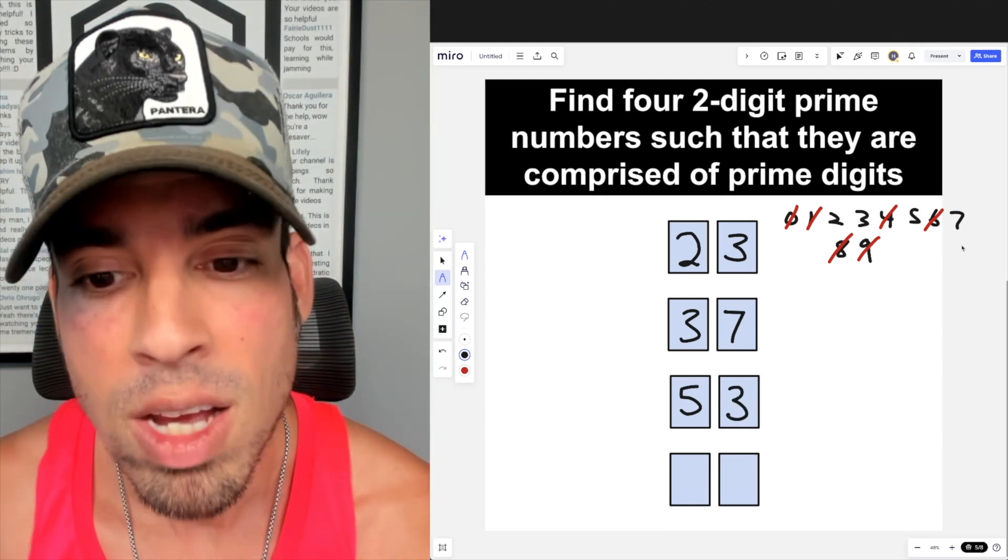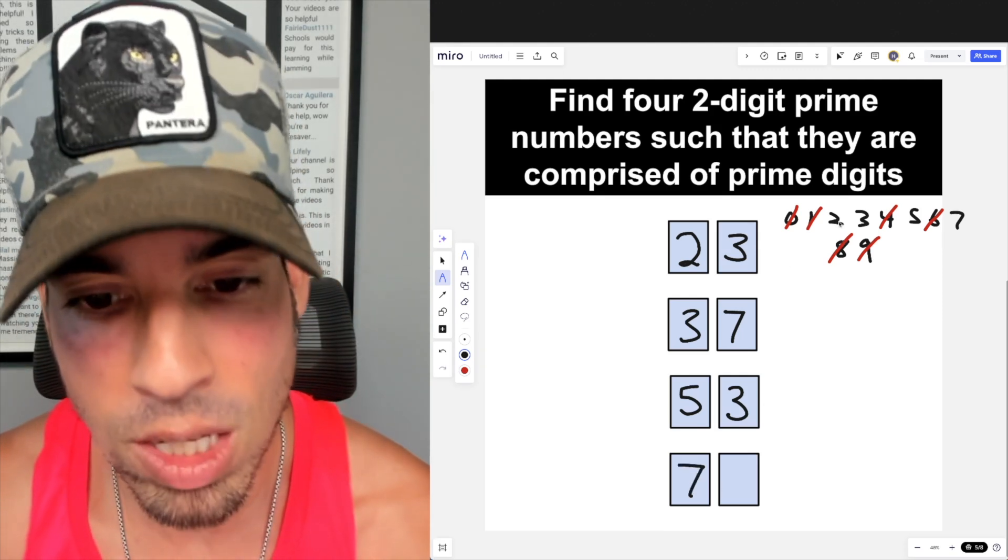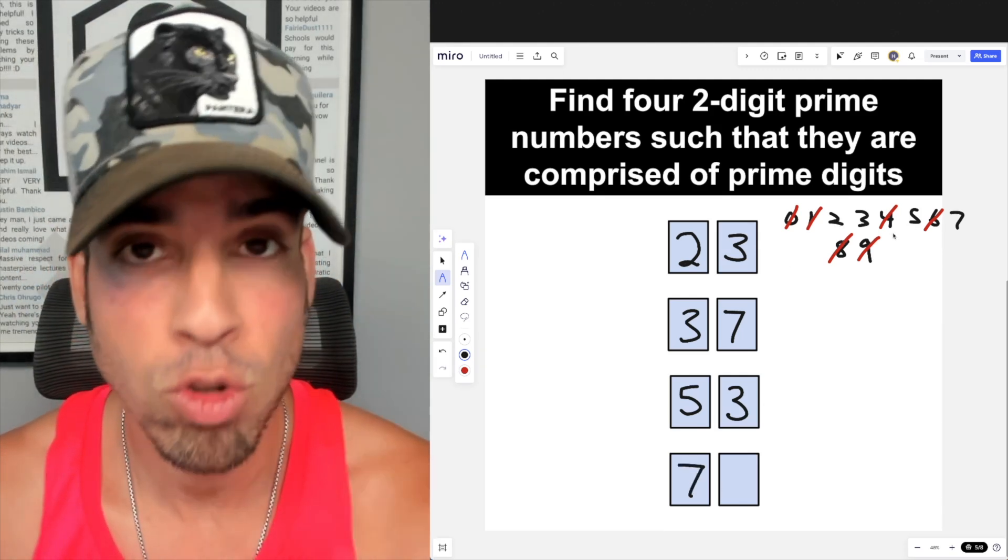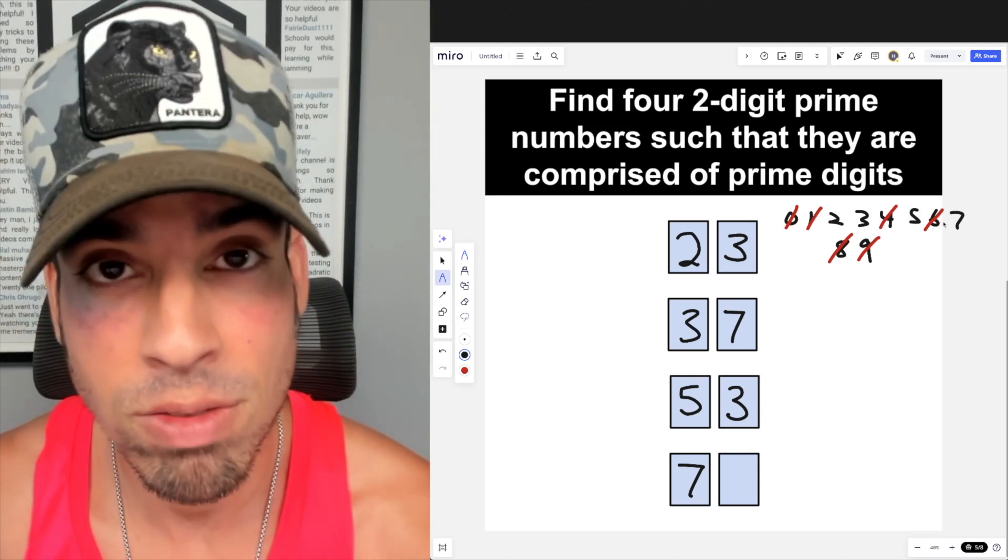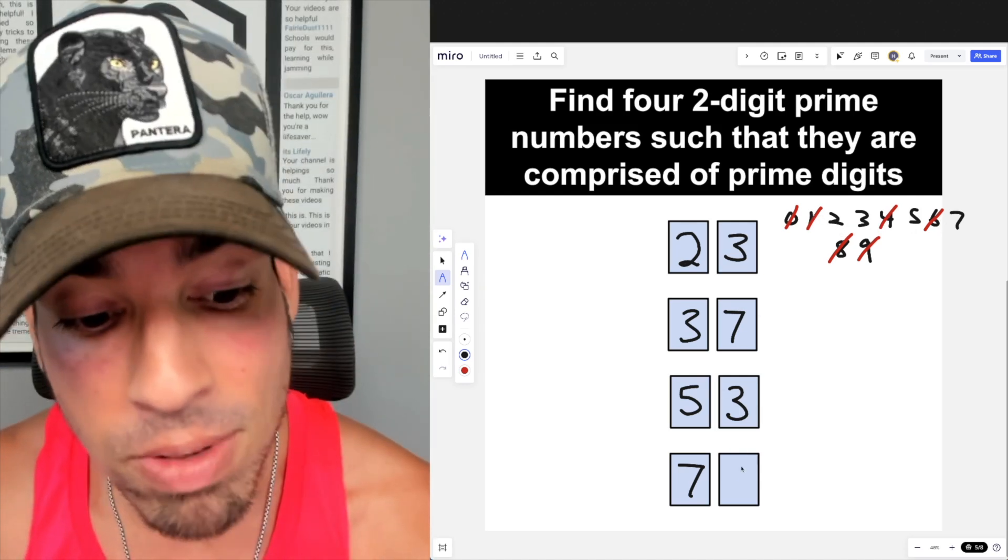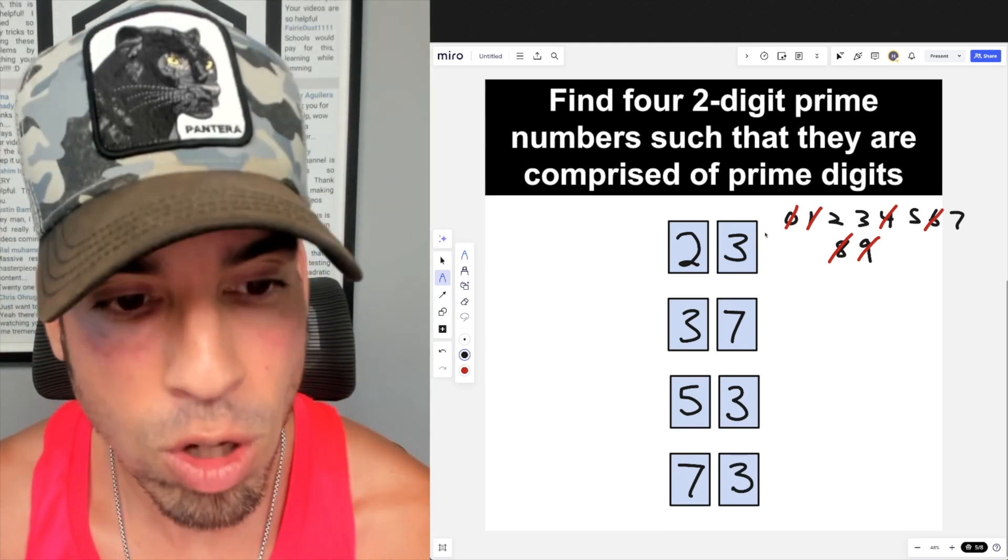Last but not least, we move on to the seventies. So we have a seven. Again, we cannot have a two or a five—those are both divisible by respectively two and five. We can't have 77 either, that's divisible by 11. But 73 is prime, and there we go.